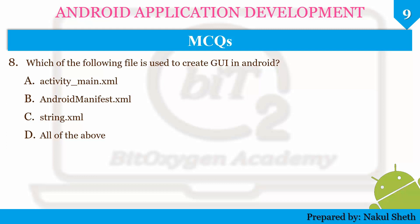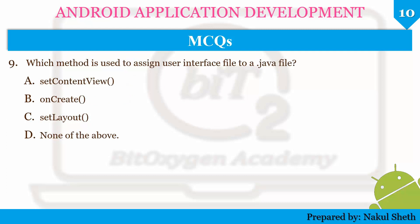The options for the GUI file question are activity_main.xml, AndroidManifest.xml, string.xml, or all of the above. The correct answer is activity_main.xml. Next question: which method is used to assign a user interface to a .java file? The options are setContentView, onCreate, setLayout, or none of the above. The correct answer is setContentView, where we pass the GUI file as a parameter, such as setContentView(R.layout.activity_main).